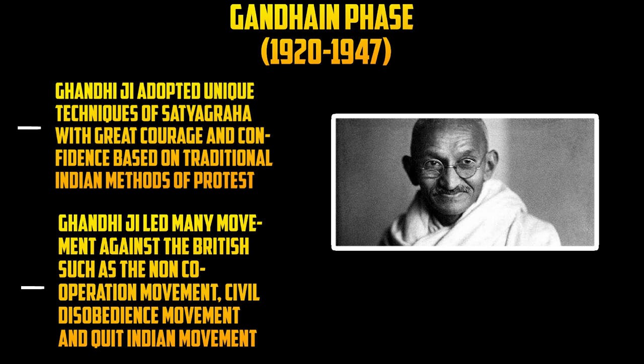In order to protest the Jallianwala Park massacre, Gandhiji gave a call for the non-cooperation movement against the British government. This non-cooperation movement was launched only after the Jallianwala Park massacre. This was the starting of the Gandhian phase, which took place in the year 1920 to 1947. The non-cooperation movement was launched on 5th September 1920 by Mahatma Gandhi, between the years 1920 to 1922.